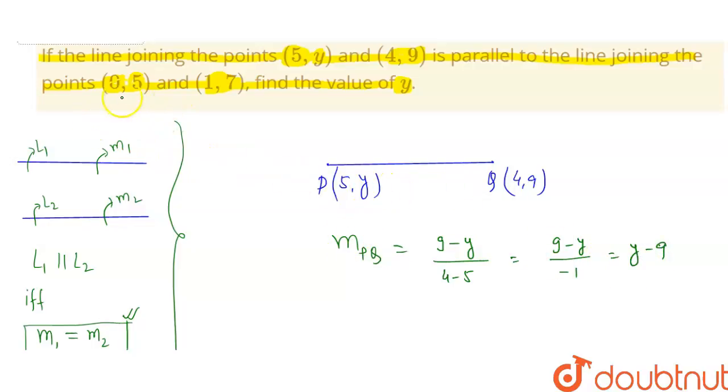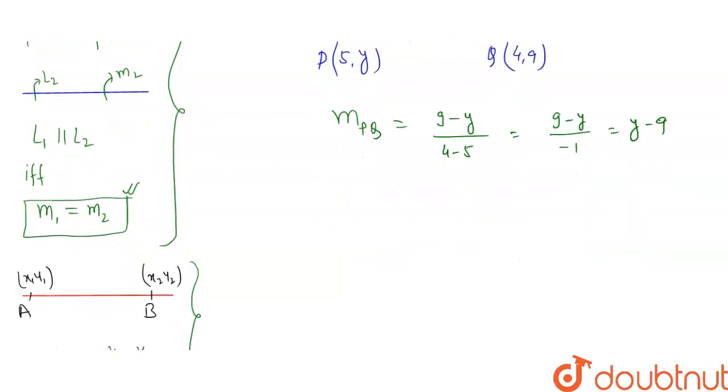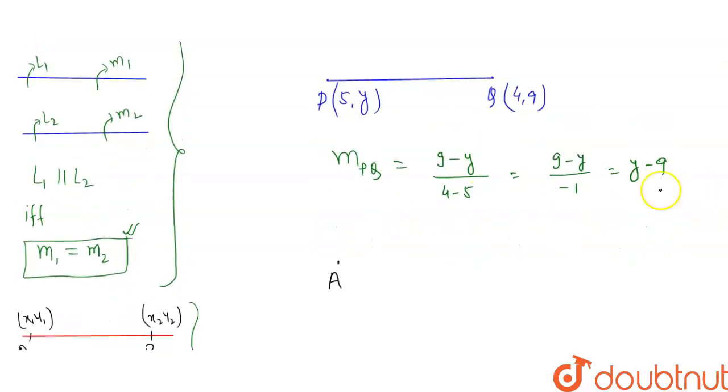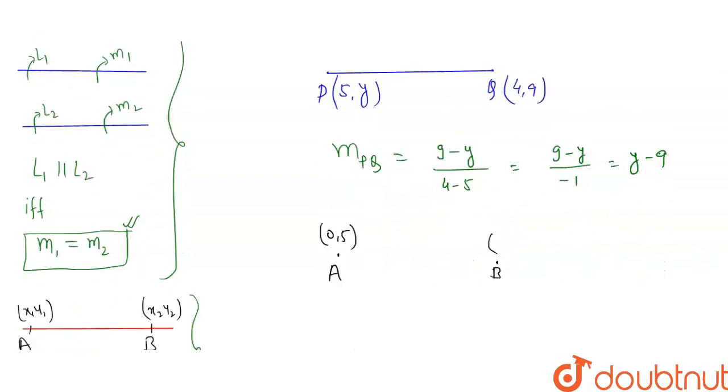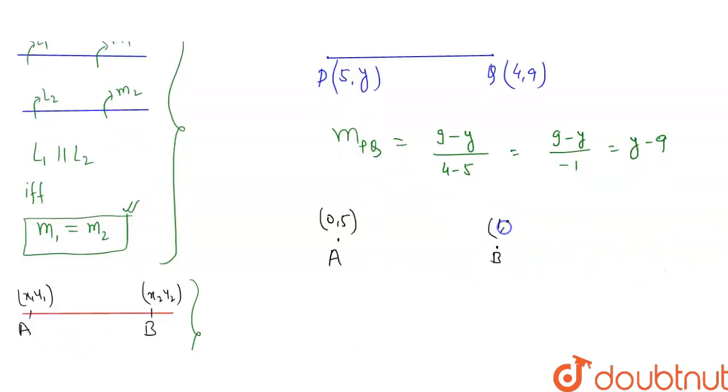And slope of these two points will be what? We know we have another point, let's say A which is (0, 5), and we have another point B with coordinates (1, 7).